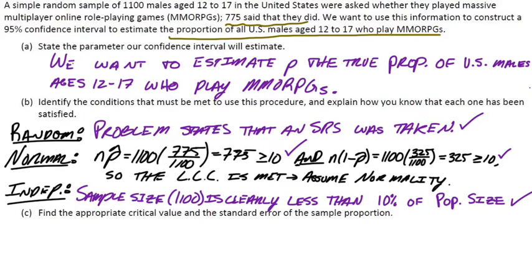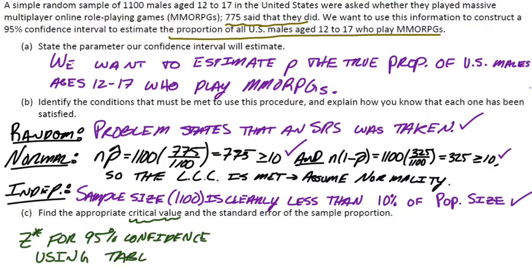Part c says find the appropriate critical value, which is z-star, and the standard error of the sample proportion. So let's start with z-star. In my case, I'm just going to use table A. To get full credit, we're talking about a 95% confidence interval. So if you look up on table A, either 0.025 or 0.975, the z-score that goes with that is 1.96. If you're a technology buff, you just use inverse norm. And we've talked about how to find the z-star in previous notes as well.